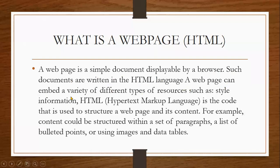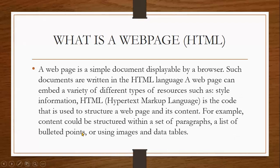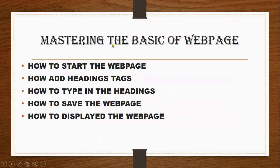A web page can include various different types of sources — it can have style, information. HTML stands for Hypertext Markup Language, and it's a code used to instruct a web page and its content. For example, content could be structured within a set of paragraphs, a list of bullet points, or using images and data tables, just like in Microsoft Word. We're going to cover how to start a web page, add the HTML structure, type content, save it, and display it.